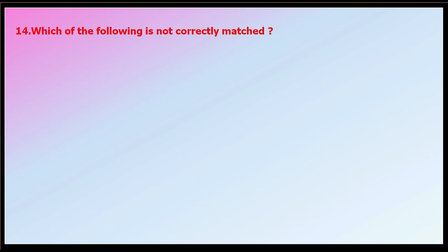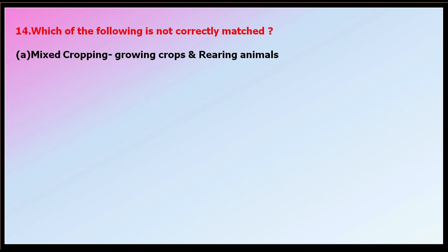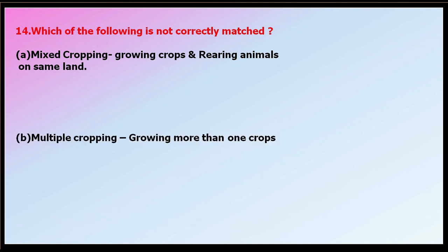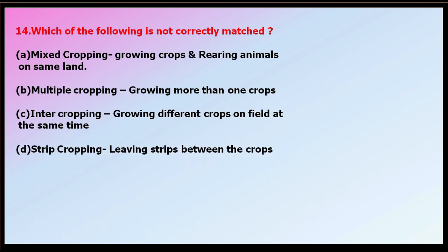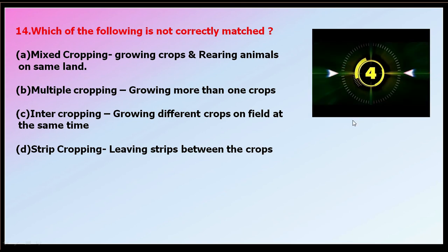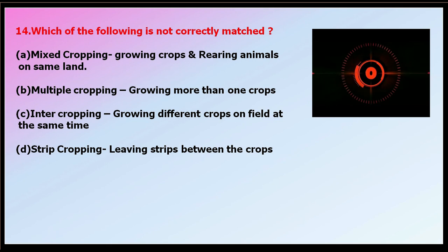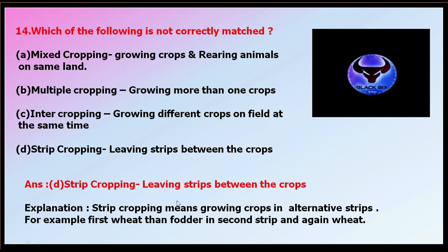Question number fourteen: which of the following is not correctly matched? Options: mixed cropping means growing crops and rearing animals on the same land; multiple cropping means growing more than one crop on the same land; inter-cropping means growing different crops on a field at the same time; strip cropping means leaving strips between crops. The correct answer is strip cropping — that definition is wrong. Strip cropping actually means growing crops in alternating strips, for example wheat, then fodder, then wheat again.